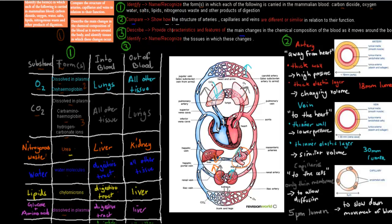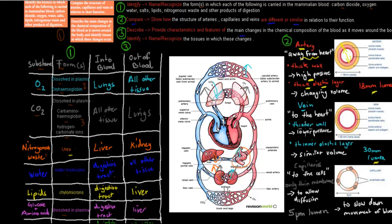The next dot point is 'compare' — show how the structure of arteries, capillaries, and veins are different or similar in relation to their function. Arteries move blood away from the heart and have the highest pressure, so they have a very thick muscular wall to withstand that pressure. They also need a thick elastic layer to change the size of their lumen — smaller when the heart is relaxed, larger when pumping — to maintain blood pressure. Their lumen is smaller than that of veins.